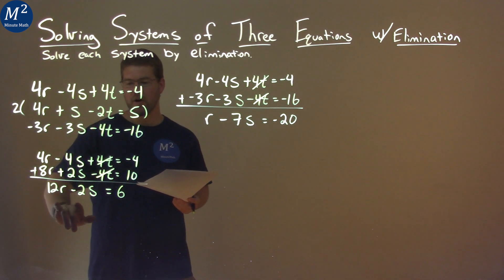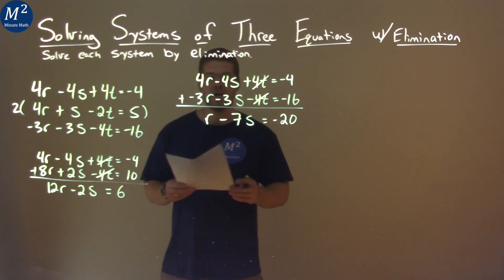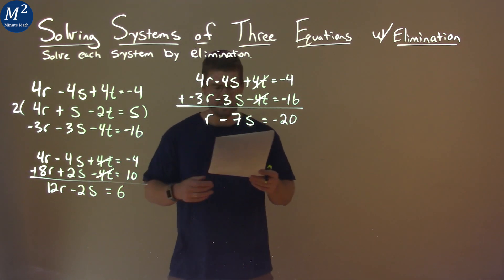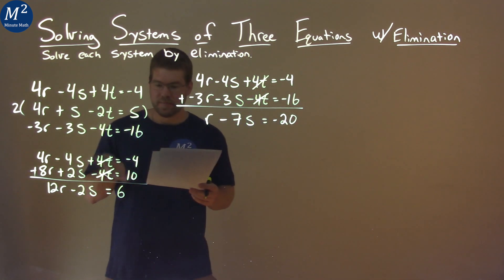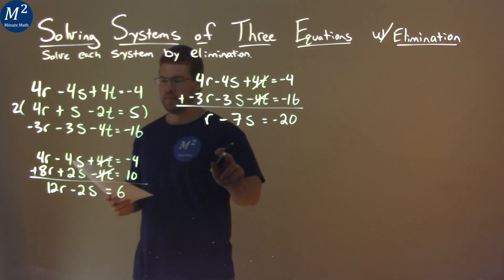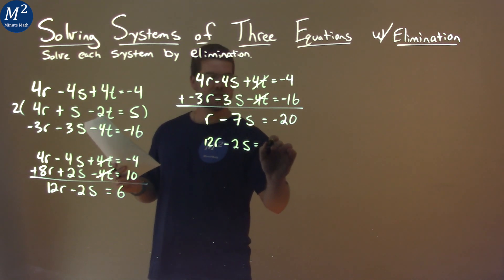All right, so now we have 12r minus 2s equals 6. And we have r minus 7s equals negative 20. I directly can't add them together to eliminate anything. But let's rewrite this first one here.